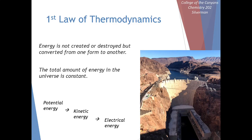We can illustrate conservation of energy with an image of the Hoover Dam. There's a lot of potential energy stored in the water up high — energy based on its position at a higher altitude due to gravity. As the water flows down through the dam, it's converted from potential energy into kinetic energy, just like when something falls off a shelf or water goes over a waterfall.